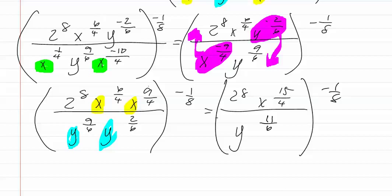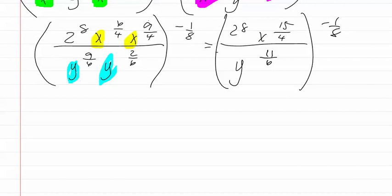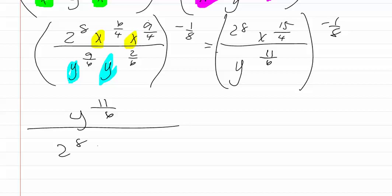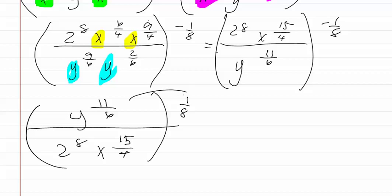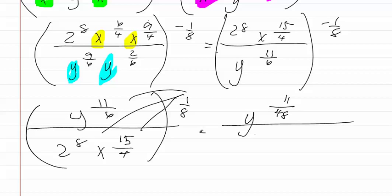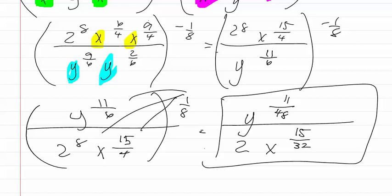We now flip this over in order to make it a positive exponent — so we have y to the negative eleven-sixths over two to the eighth, x to the fifteen-fourths — all to the positive one-eighth. We then give this one-eighth to each of the terms, giving us y to the eleven-forty-eighths over two x to the fifteen-thirty-seconds. This is our final answer.